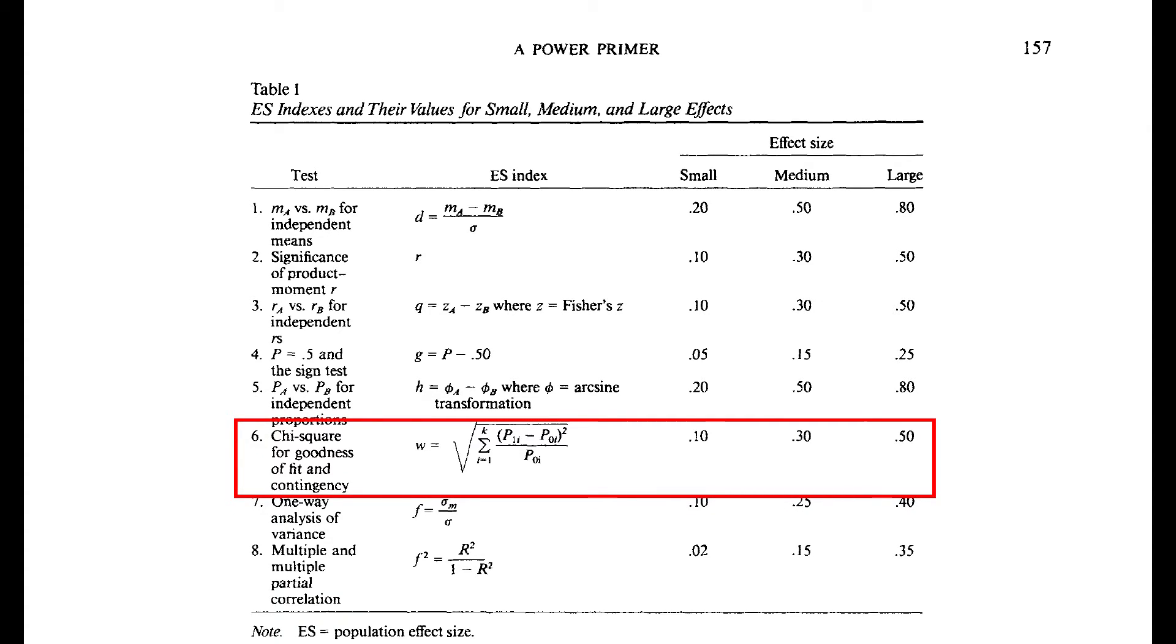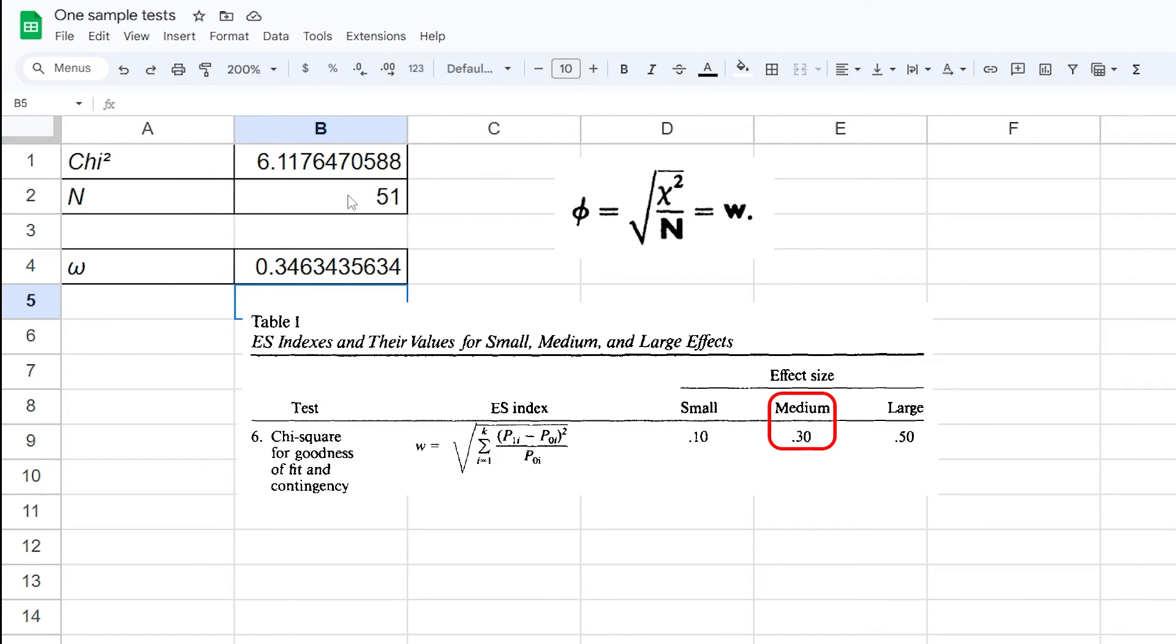0.1, 0.3 and 0.5 for small, medium and large effects. In my example 0.346 is above the threshold for a medium effect if I use Cohen's thresholds.